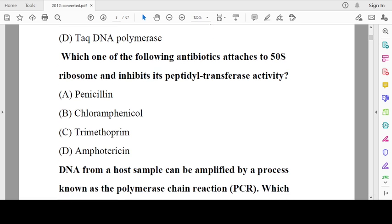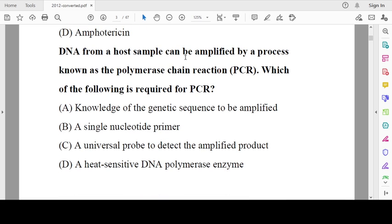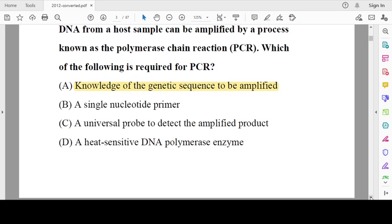Another question from antibiotics: this antibiotic attaches to 50S ribosomal subunit and inhibits peptidyl transferase activity. The correct answer is chloramphenicol. Penicillin is a cell wall inhibitor. DNA from a host sample can be amplified by polymerase chain reaction. Each of the following is required for PCR: knowledge of genetic sequence to be amplified, yes it is required. Single nucleotide primer? Wrong, it is generally a 15 nucleotide primer. A universal probe to detect amplified product? No, also wrong. A heat-sensitive DNA polymerase? Ultimately it requires a heat-resistant DNA polymerase.